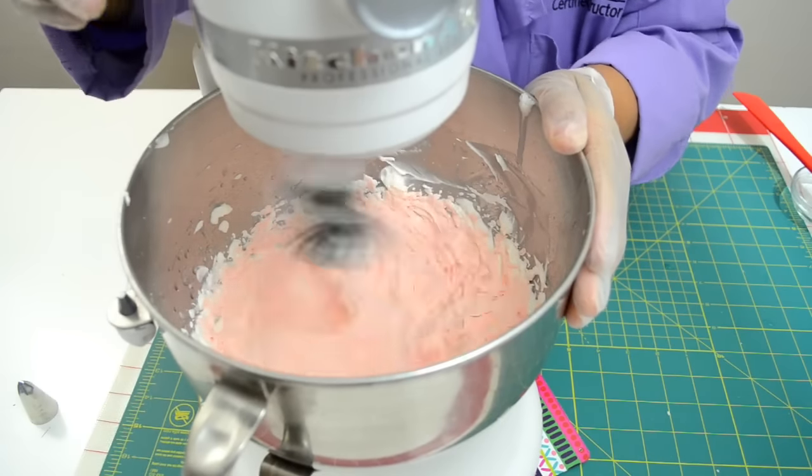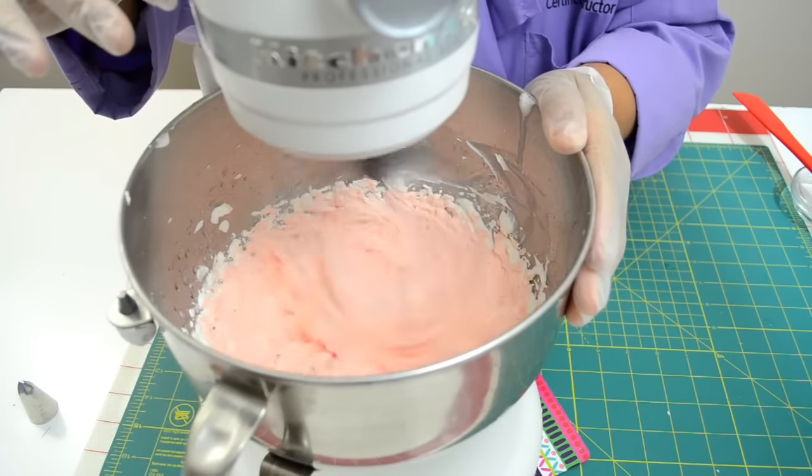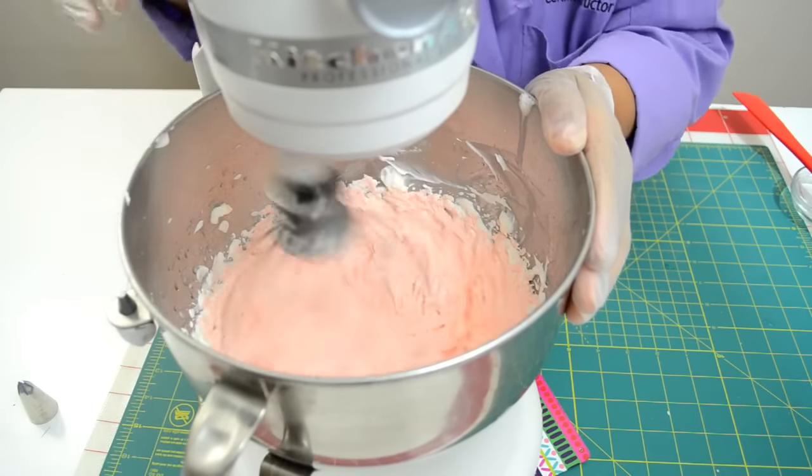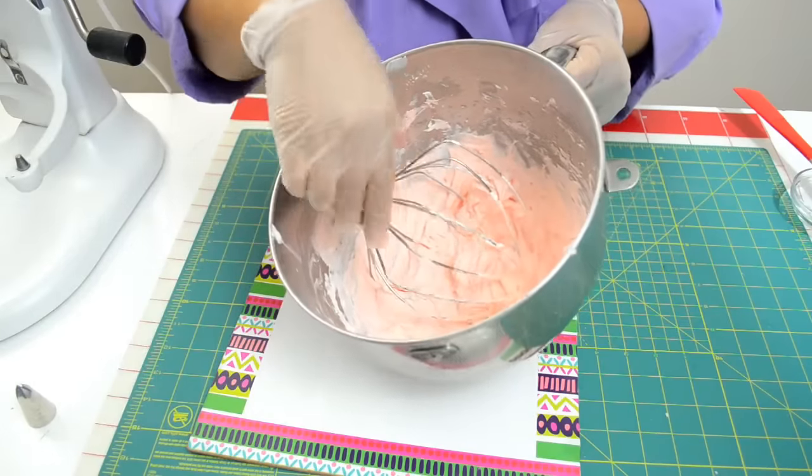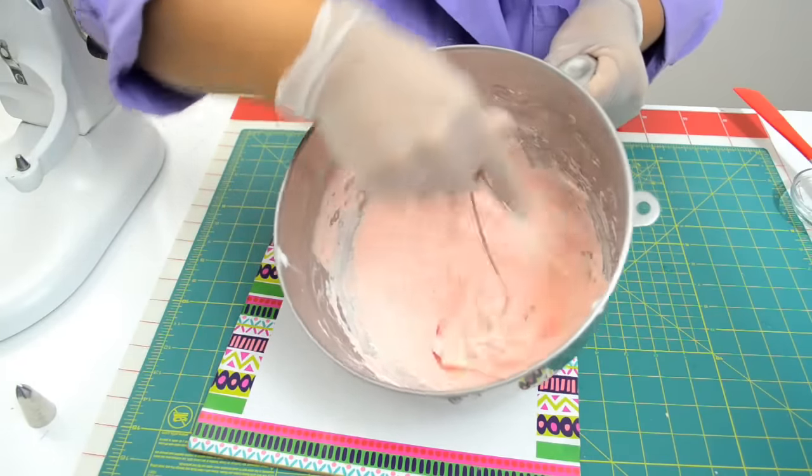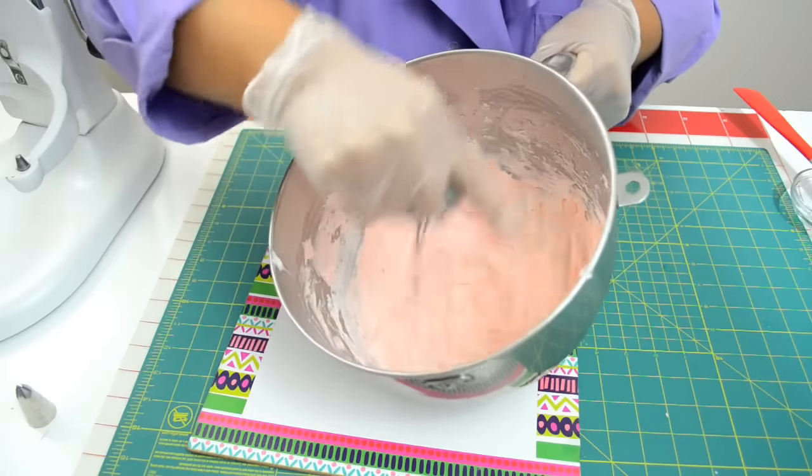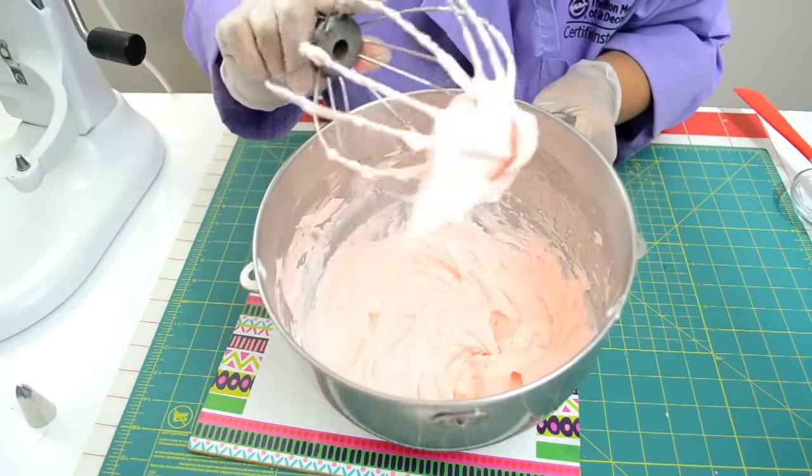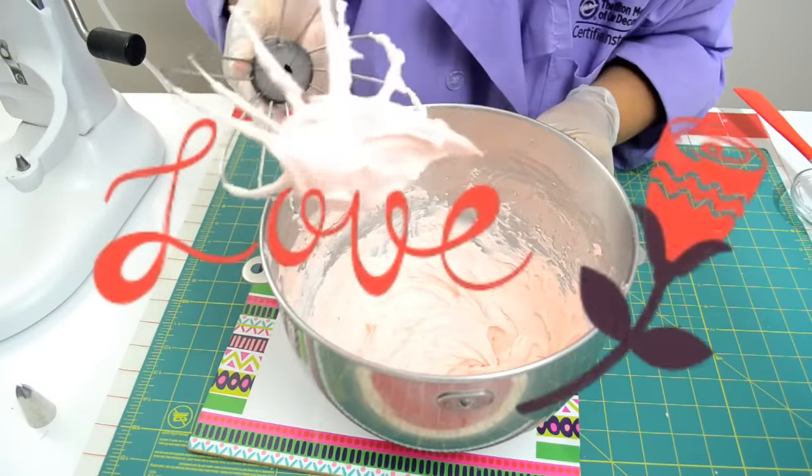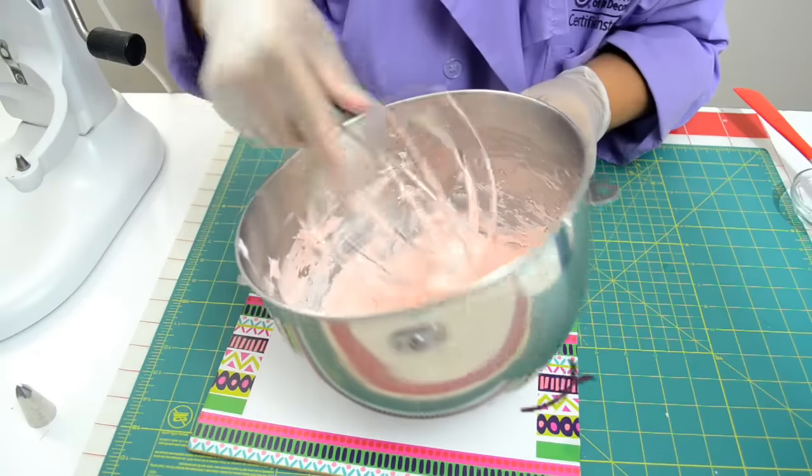And now I will stop the mixer. I do not want to over whisk the cream or it will turn into butter. Our stabilized whipped cream is done. See how I get firm peaks? That's what we want so our decorations will be well defined and firm.